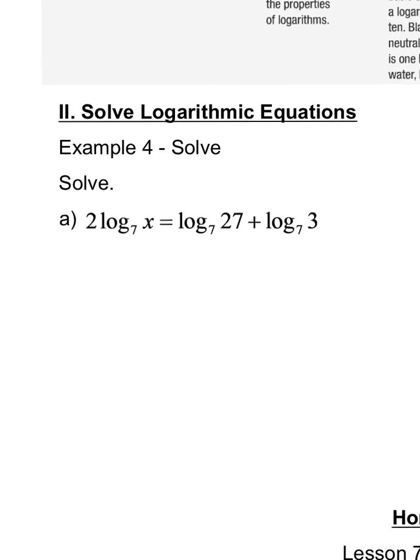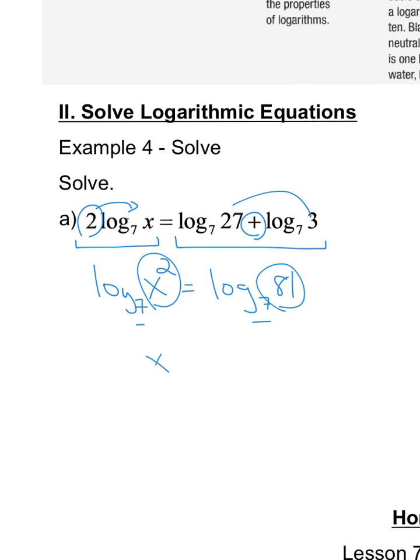Really straightforward in terms of things. When you're solving today and you see something like this, a number out front, I remember from our last example that a number out front is a power. So you bring that up. On the right hand side, when I'm using my properties, I understand that when I see a sum, I have a product of two numbers. So I'm log base 7 of 3 times 27, and we wind up with 81. At this point, we're logging the same number. The bases are the same. We know that x squared has to equal 81. So x is going to be plus or minus 9. And as always, we want to check our answers. Negative 9 does not work because we can't do log base 7 of negative 9. So we know our only answer is 9.